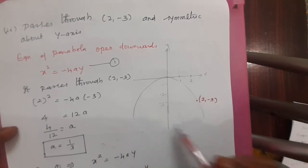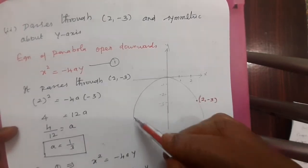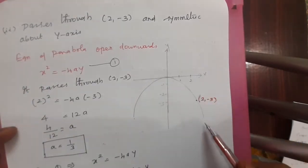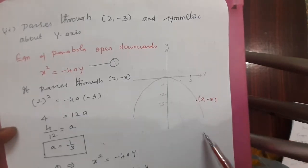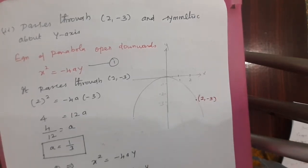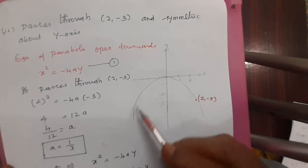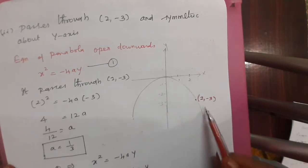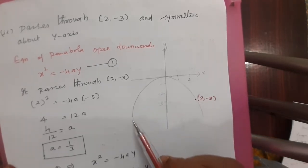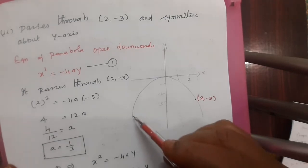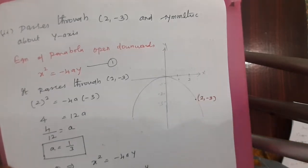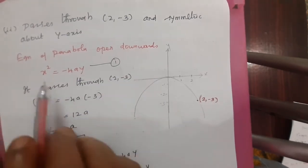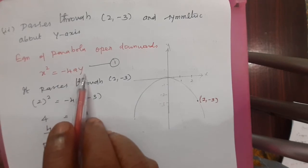Since the parabola passes through 2 comma minus 3 and is symmetric about the y-axis, the curve opens downward. The point 2 comma minus 3 lies in the fourth quadrant, therefore the parabola is a downward curve. The equation of the parabola open downward is x squared equals minus 4ay.